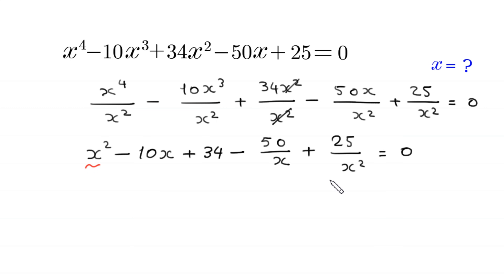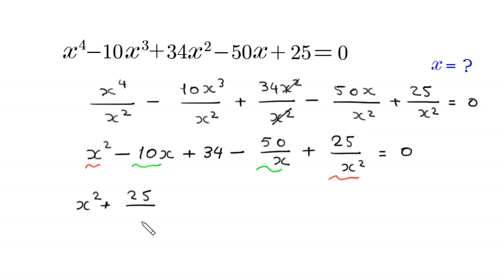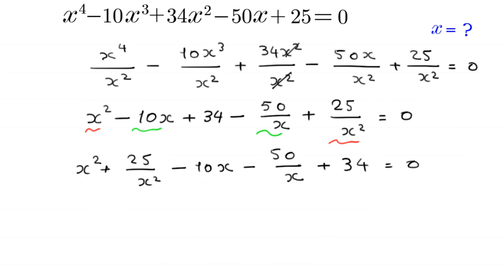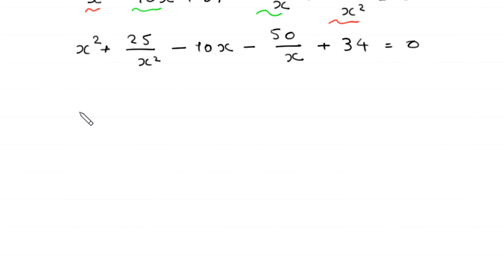Now we combine the terms with x squared and the terms with x. This will become x squared plus 25 over x squared, minus 10 times x minus 50 over x, plus 34 is equal to 0.